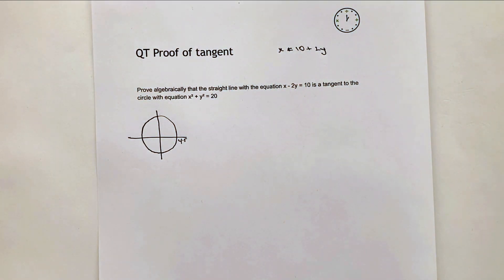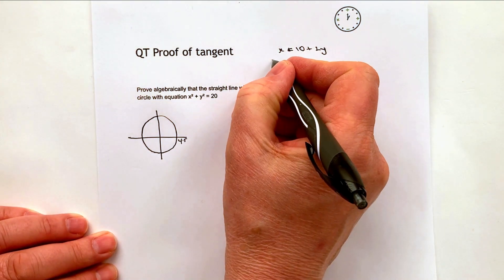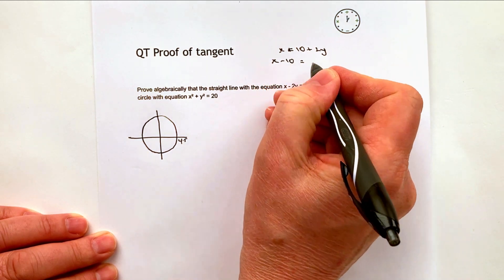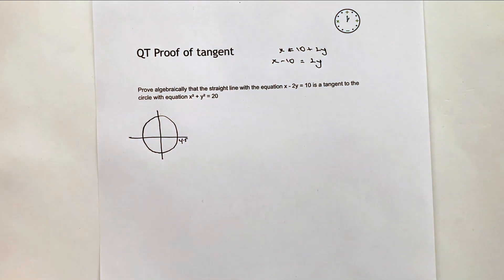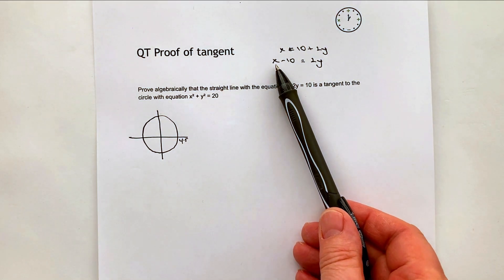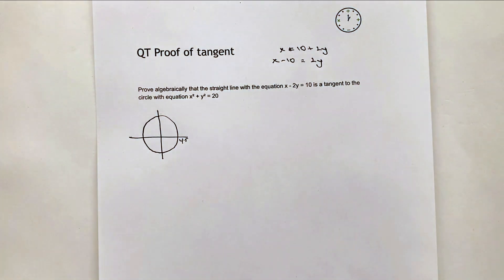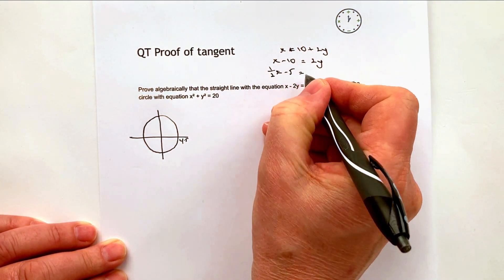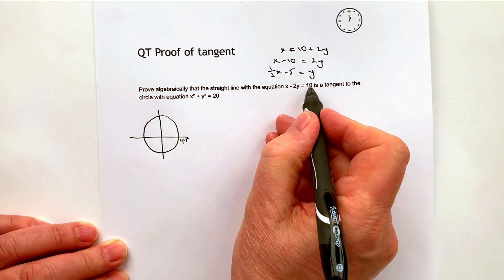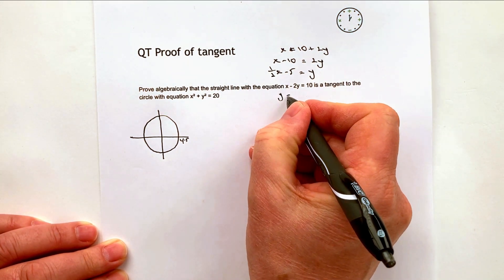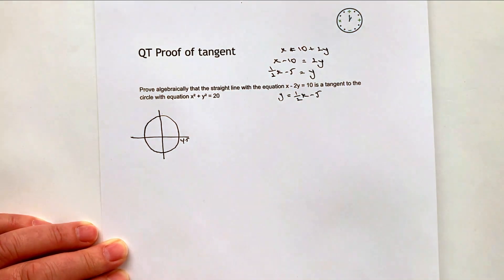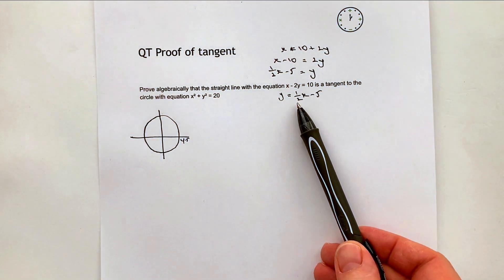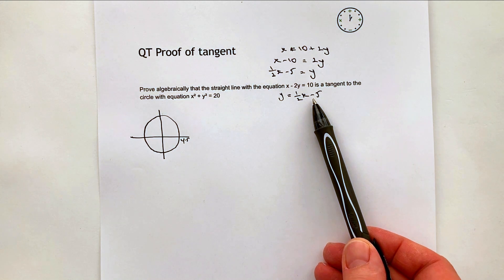So now I've got a positive value of 2y. I'm going to move that 10 to the other side, so I've got x minus 10 equals 2y. Then I'm going to divide through by 2, bearing in mind that I need to divide both of these through by 2. So what I actually get is y equals a half x minus 5. And that's actually the equation of this line, showing the gradient and the y-intercept.